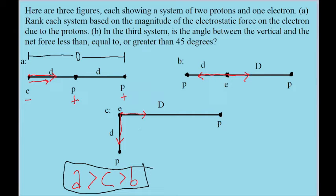Now let's look at part B of the problem, which asks about situation C. Since the vectors are at a right angle from one another, the net force acting on the electron will be somewhere in a diagonal direction, with both a horizontal component and a vertical component. The problem asks whether the angle between the vertical and the net force — the angle between the force and distance D — will be less than, equal to, or greater than 45 degrees.